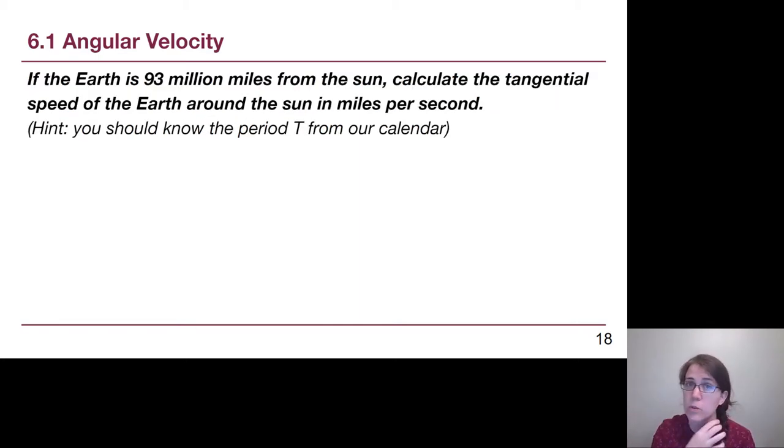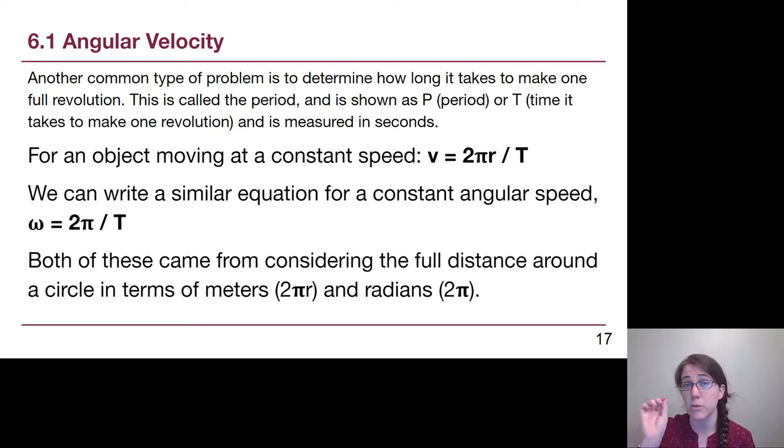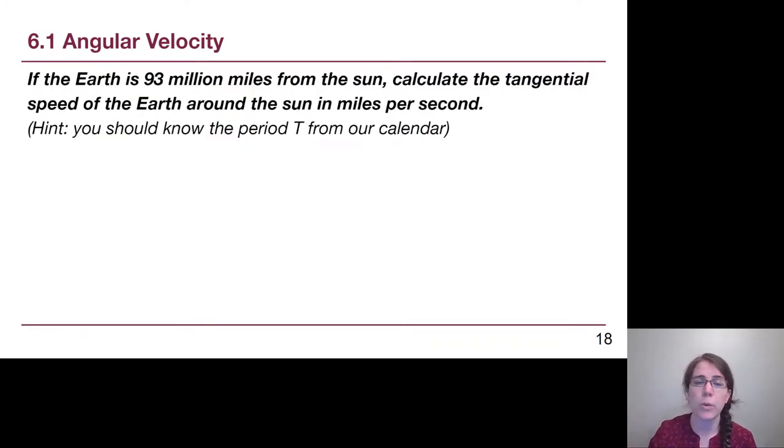A quick example to see how this works. Let's try with the Earth and the Sun. That is close enough to a circle to apply our physics. If the Earth is 93 million miles from the Sun, and it's going around in big circles, we want to calculate the tangential speed of the Earth as it goes around. The question asks for miles per second. And it doesn't give you the period, but if we think about our calendar a little bit, hopefully we'll figure out what that period is.